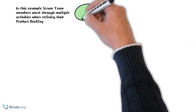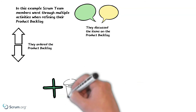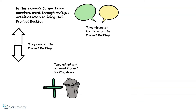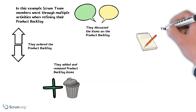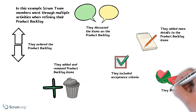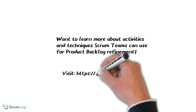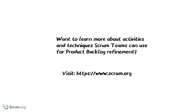This was just one example of a team refining their Product Backlog. There were multiple activities the team went through in this example: they discussed the Product Backlog items, they reordered the Backlog, added and removed Product Backlog items. Additionally, they added further details including acceptance criteria, and they broke down a large Product Backlog item into smaller sized Product Backlog items. Want to learn more about activities and techniques that teams can use for Product Backlog refinement? Visit the Scrum.org website. Thank you for watching.